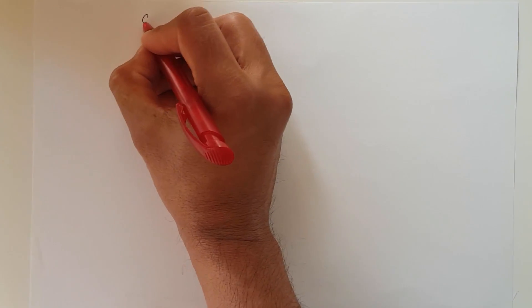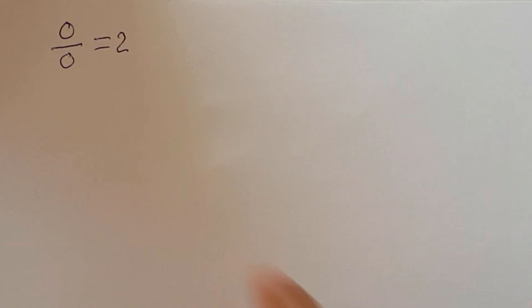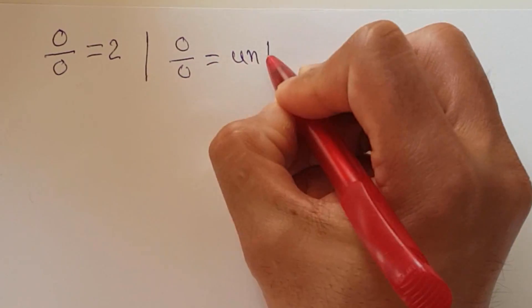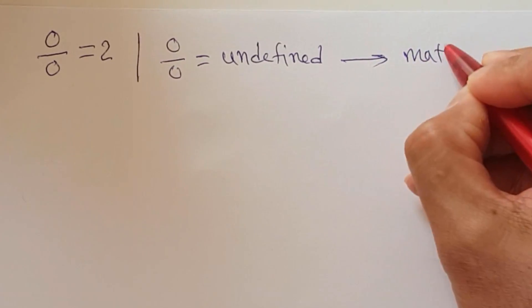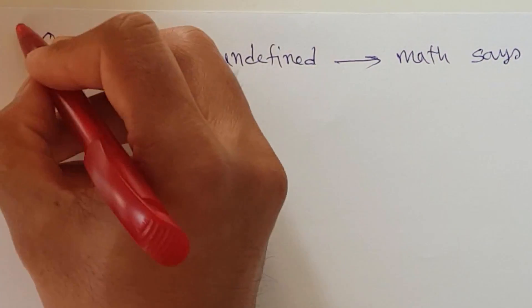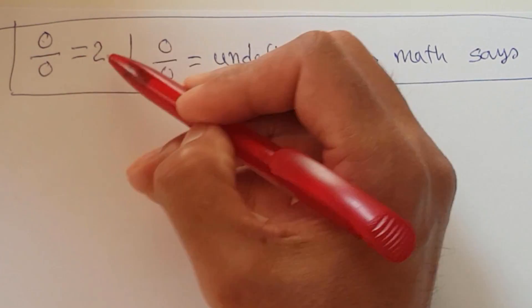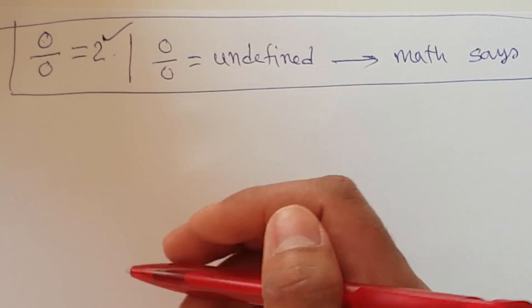Hi everyone, welcome back once again in my fun of mathematics series. Today I will prove that 0 over 0 is equal to 2. That is normally not usual in mathematics, because according to mathematics 0 over 0 is equal to undefined. But now I will prove 0 over 0 is equal to 2 — this is not supported by math. Just stick with me and see, I will prove this unbelievable math.